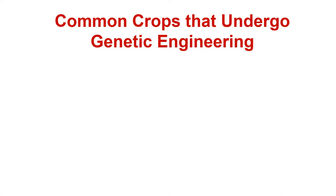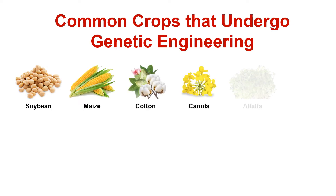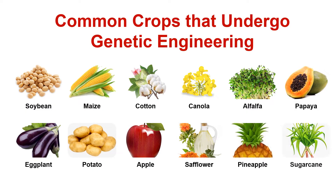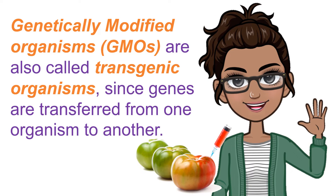The aim of planting genetically modified organisms (GMOs) and their commercial use is to help improve farming methods efficiently and productively. Some of the most common GMO crops are soybean, maize, cotton, canola, alfalfa, papaya, eggplant, potato, apple, safflower, pineapple, and sugar cane. Genetically modified plants have created resistance to harmful agents, enhanced product yield, and shown increased adaptability for better survival. Recombinant technology has been widely used in improving crop varieties. GMOs are also called transgenic organisms since genes are transferred from one organism to another.